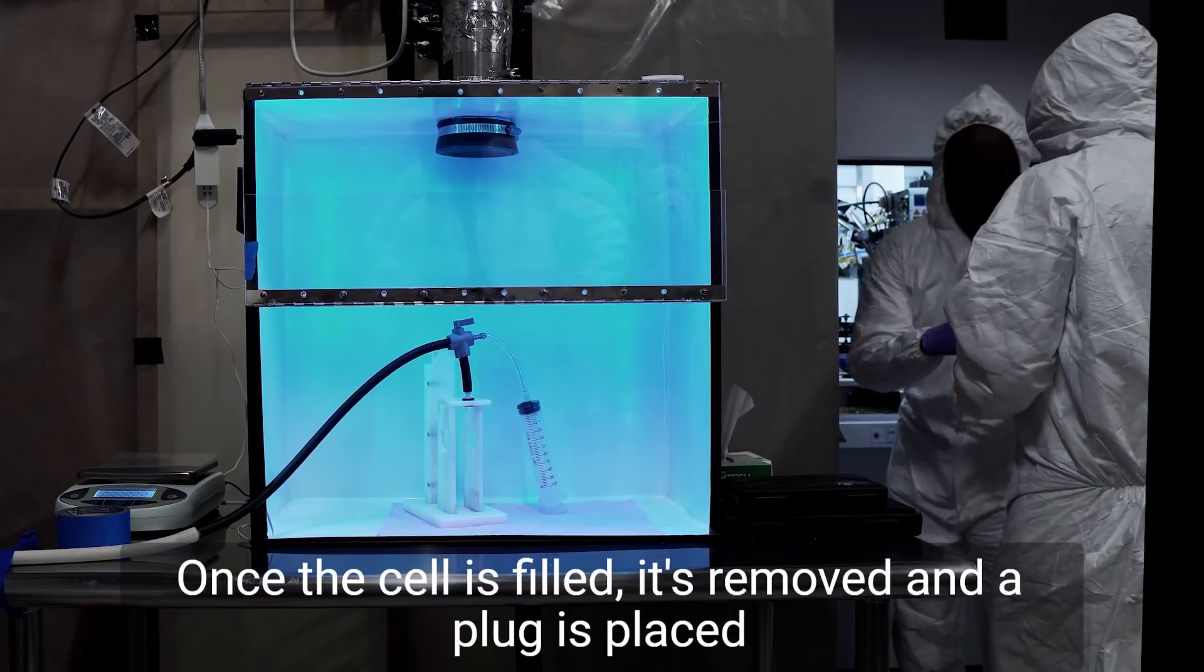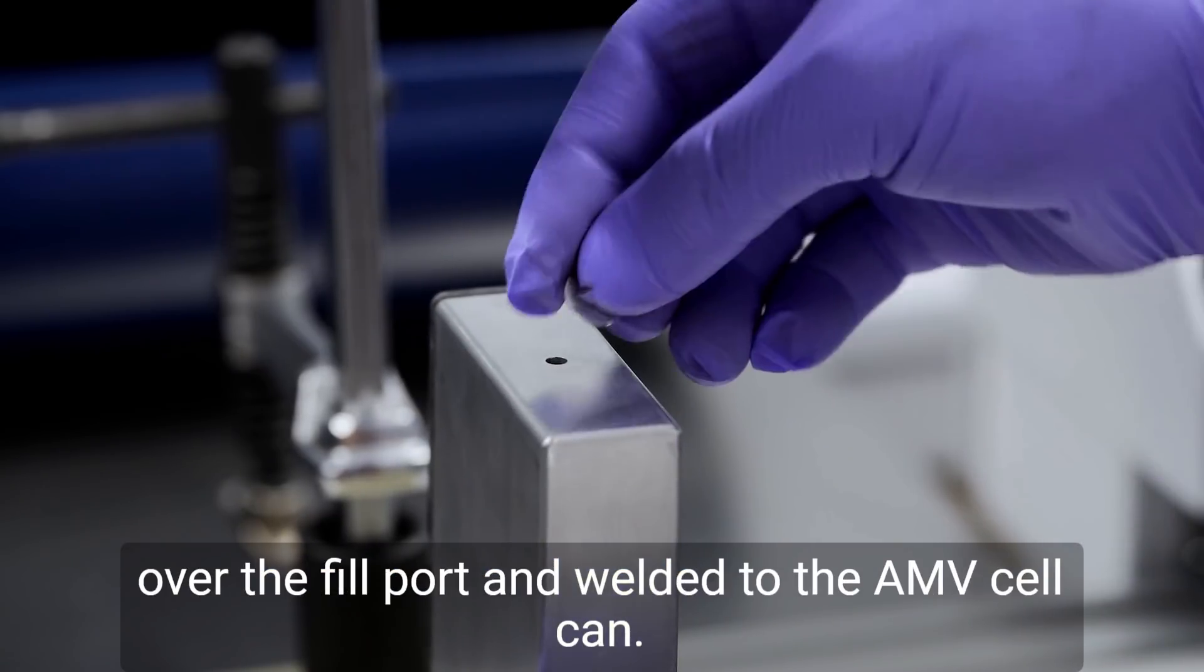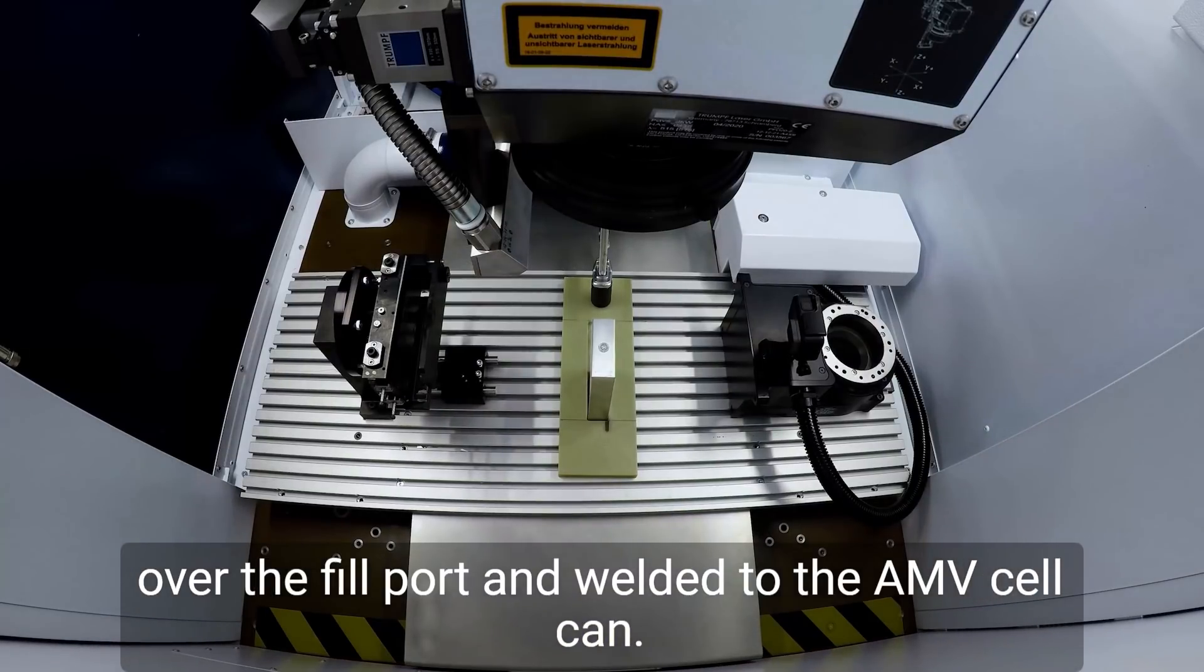Once the cell is filled, it's removed, and a plug is placed over the fill port and welded to the AMV cell can.